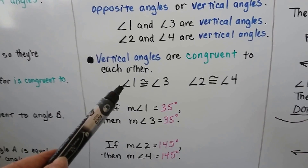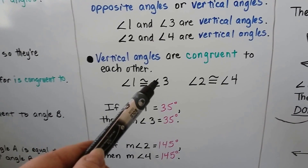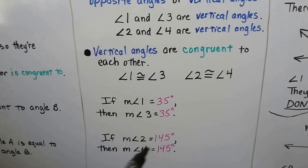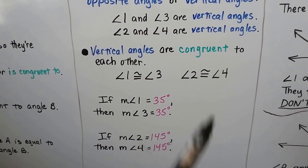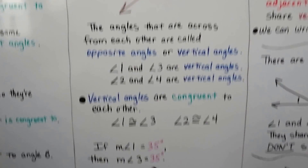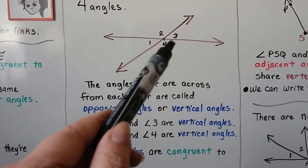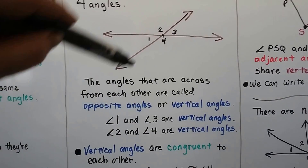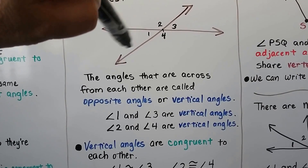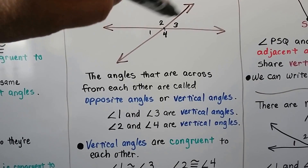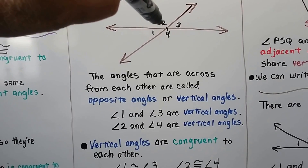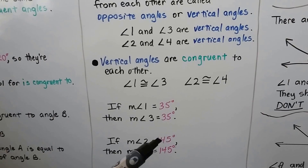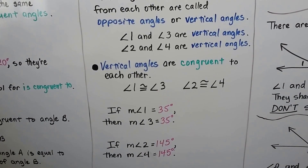If the measure of angle one was 35 degrees, then angle three — the one opposite from it — is also going to be 35 degrees. If the measure of angle two is 145 degrees, then angle four is going to be 145 degrees — they're across from each other. And angle one plus angle two makes a straight line, so 35 plus 145 gives us 180 degrees.